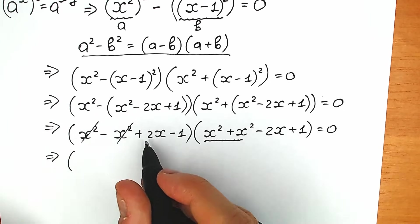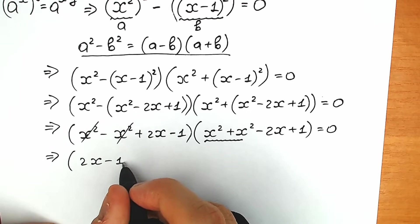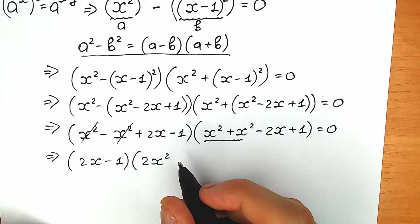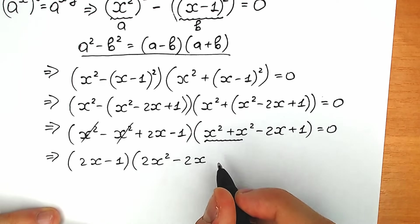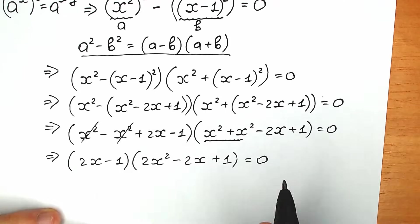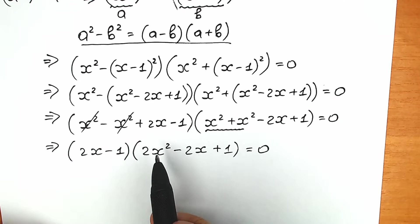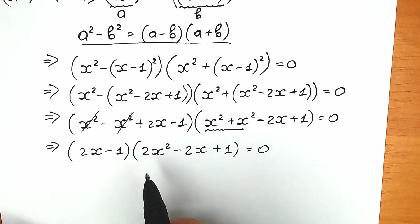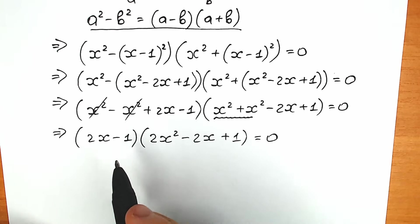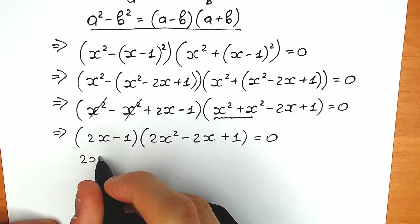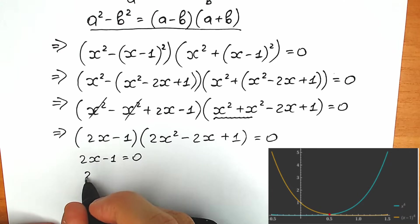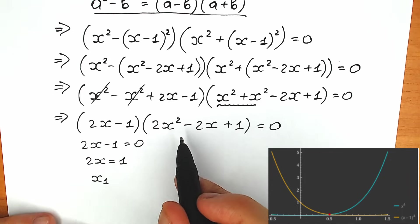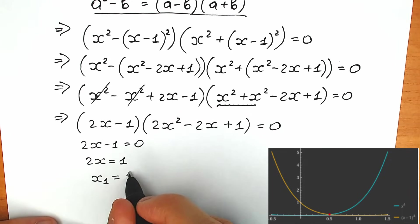As a result we get two important factors: the first is 2x minus 1, and the second is 2x squared minus 2x plus 1, equal to zero. Since the product of two parentheses equals zero, either the first or the second equals zero. Starting with the easier one: 2x minus 1 equals zero, so x equals one half. This is our first root, x₁ equals one half.